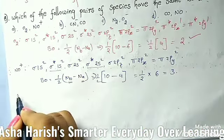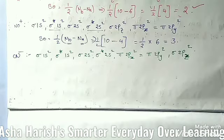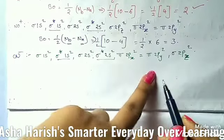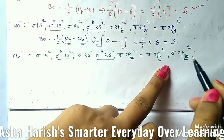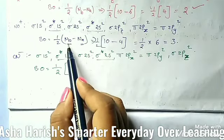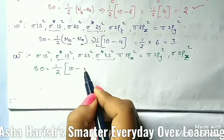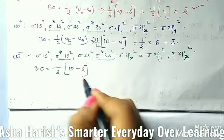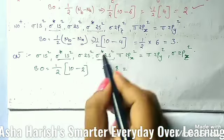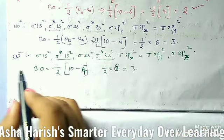For CN⁻, the molecular orbital electronic configuration is: σ1s², σ*1s², σ2s², σ*2s², π2px² = π2py², σ2pz². Bonding orbitals: 2, 4, 6, 7, 8, 9, 10 — that's 10. Anti-bonding orbitals: 2, 4 — that's 4. Bond order = (10 - 4)/2 = 3. So CN⁻ has bond order 3.